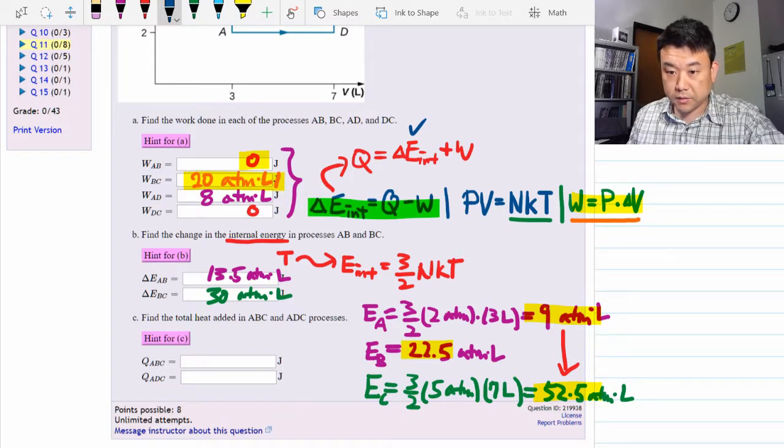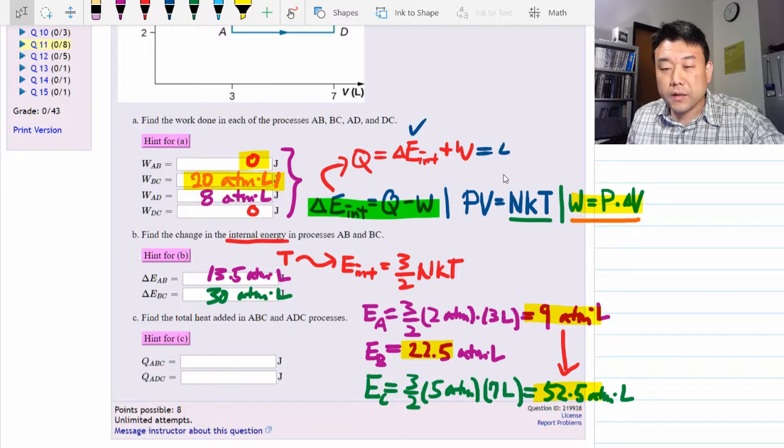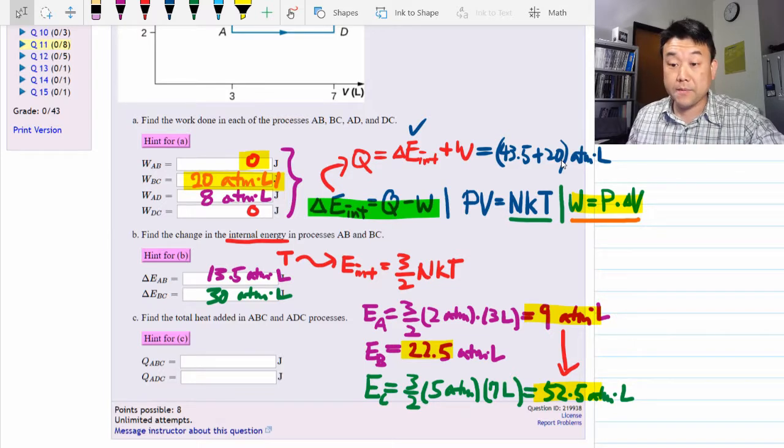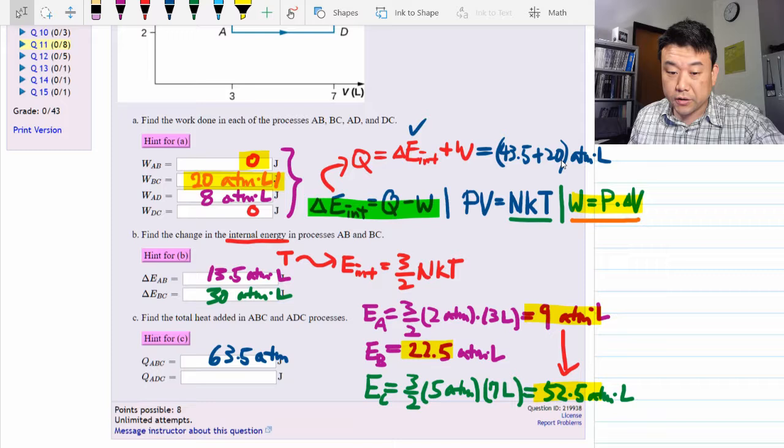Plugging in the numbers, the change in the internal energy is 52.5 minus 9, so 43.5 atmosphere liter. And the work done is plus 20 atmosphere liter. So for path ABC, the total heat added must be 63.5 atmosphere liter. Once again, you should convert it for your answers.